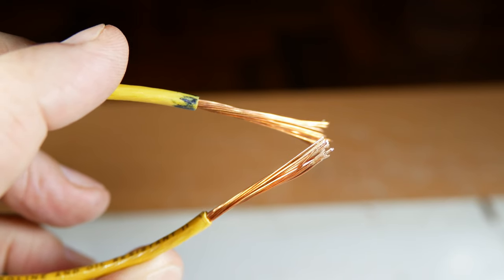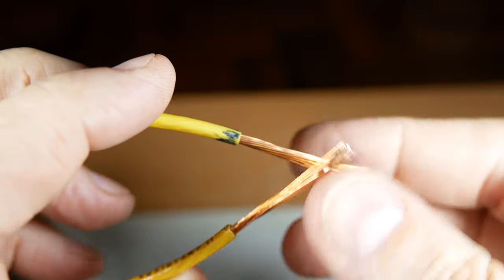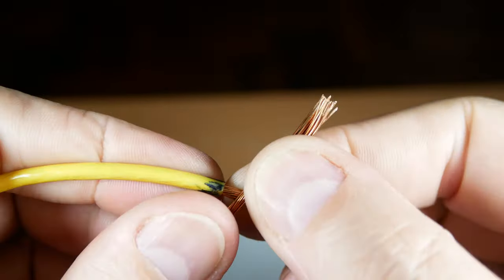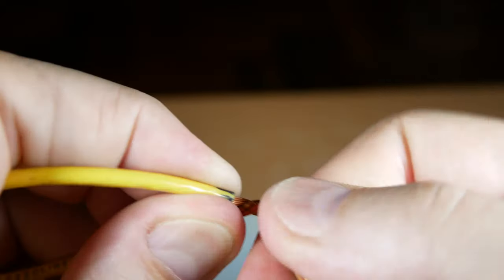Let's start out with a rat tail or a pigtail splice. We just bare off our wire. How much will depend on the gauge of the wire and so on, but you just twist them together.